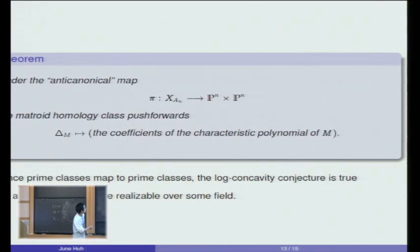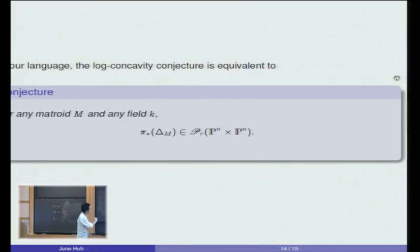But not just that. In fact, this proposition shows that log-concavity conjecture is equivalent to the following statement. If you push forward under this anti-canonical map of the matroid class, then it should lie in the space P of the product of projective spaces, even if your matroid is not realizable over any field. That statement has been verified in many cases, and it's true for some mysterious reasons so far.